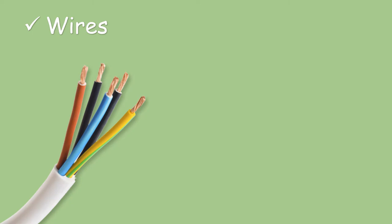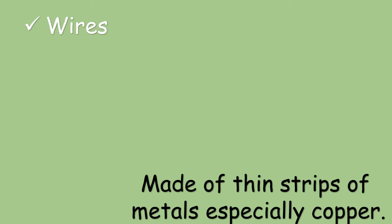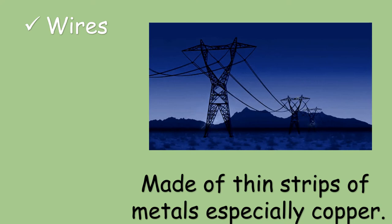Next, we have the wires. Electrical wires are made up of thin strips of metals called copper. Most of the wires we see around us have rubber covering. Wires are used to connect one electrical part to another. They allow electric currents to flow in a circuit.